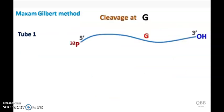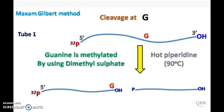Let's talk about the cleavage at G. The guanine is methylated by dimethyl sulfate and the methylated guanine is treated with piperidine. Then the sugar phosphate backbone gets cleaved.